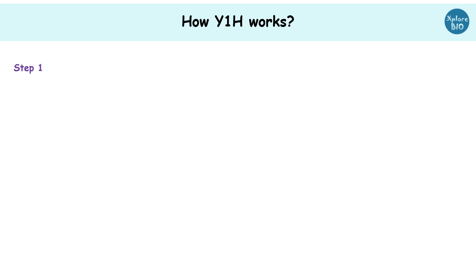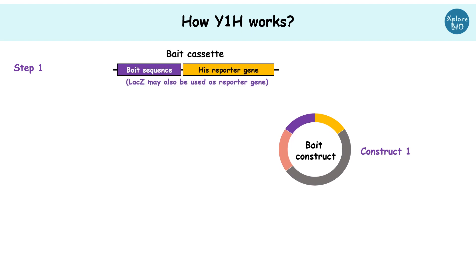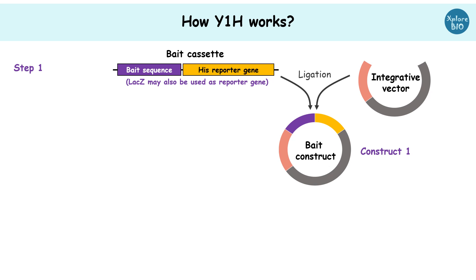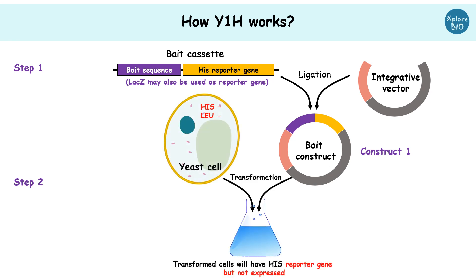In yeast one hybrid, two plasmid constructs are used. Construct one, also called the bait construct, has the cassette of the DNA sequence or bait to be checked for protein binding, followed by a selection gene, which is then incorporated in an integration vector. The bait sequence may be a promoter, a regulatory sequence, a cis element, or any such sequence. The bait construct along with its integration vector is transformed into a yeast strain lacking important genes for histidine and leucine biosynthesis. This construct integrates into the yeast genome, but the reporter gene is still not expressed.